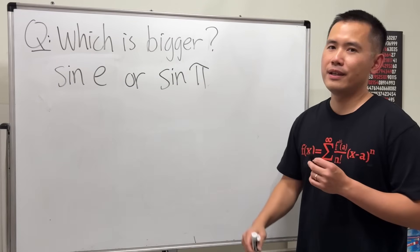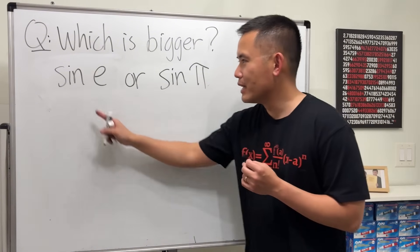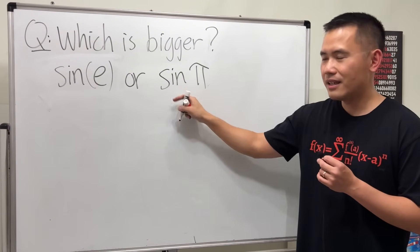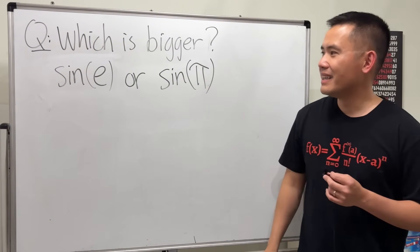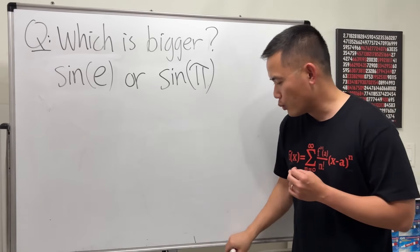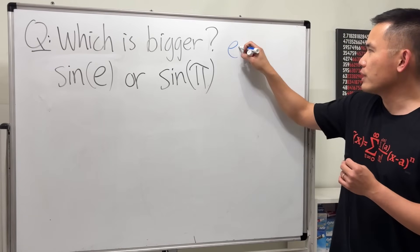Sine of e or sine of π. We have sine of the number e and sine of the number π. e is the special number which is approximately 2.718, and let me write that down right here for you guys.